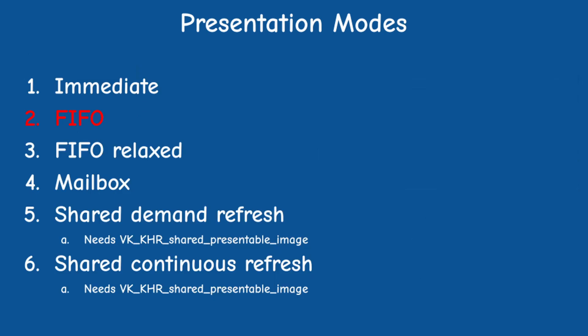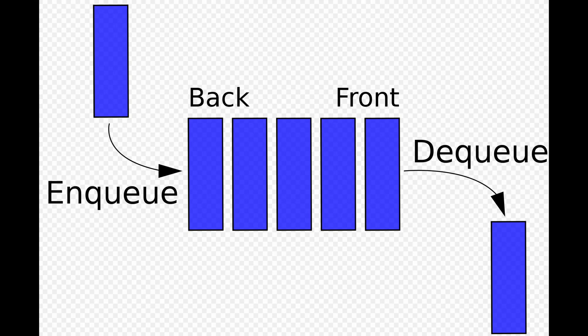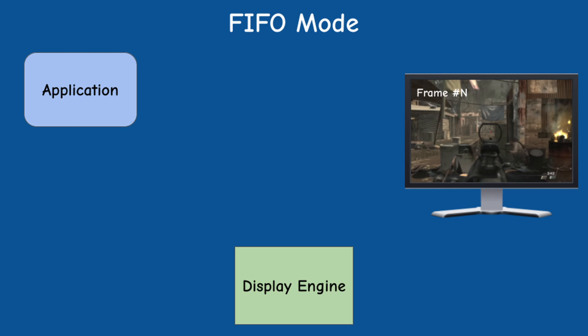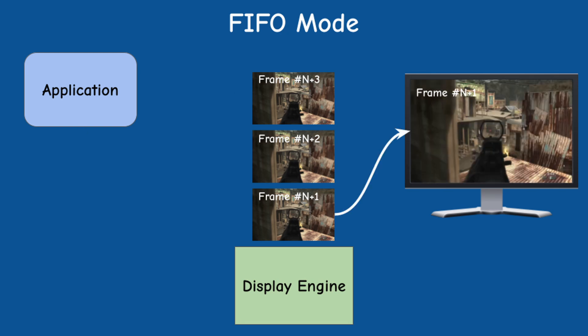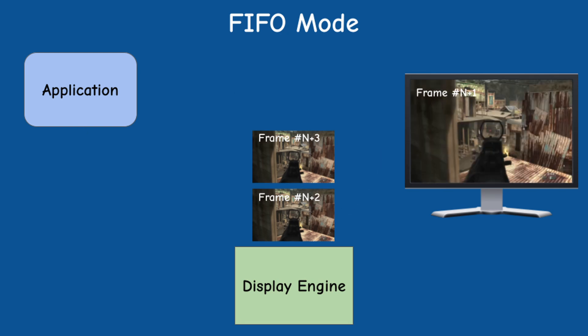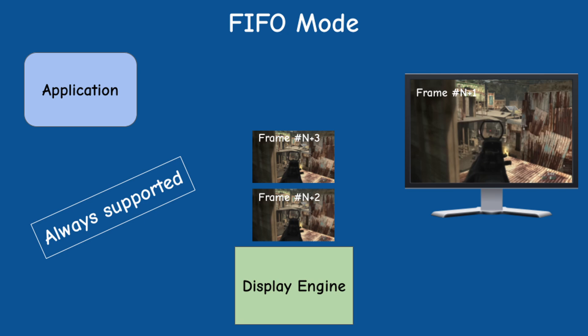The next mode is FIFO, which stands for first in, first out. In this mode the system maintains a queue of images. The application adds images to the tail of the queue, and the presentation engine grabs the next image to be presented from the head of the queue. We will discuss how exactly the application gets images to render in a future video. For now it is enough to say that this mode provides the closest behavior to what we have in OpenGL, which is probably why this mode is the only one guaranteed to be supported.